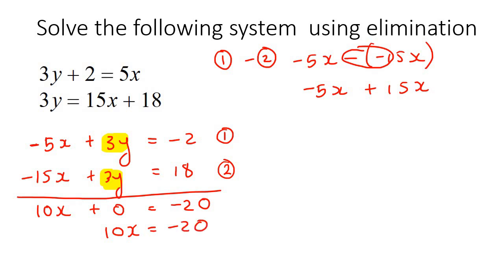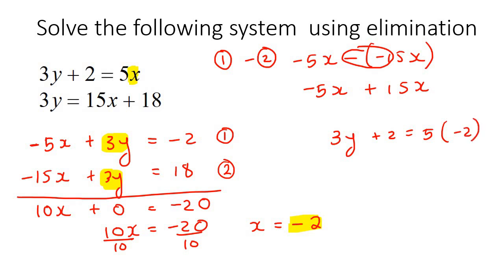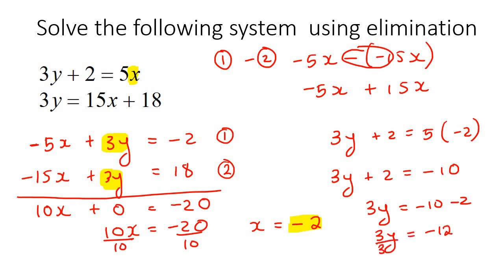So we end up with 10x equals negative 20. We divide both sides by 10 and get x equals negative 2. Now that we know x is negative 2, we need to find y. Take that x value and plug it into one of the equations. Using the first equation: 3y plus 2 equals 5 times negative 2, so 3y plus 2 equals negative 10, meaning 3y equals negative 12. Dividing both sides by 3, y equals negative 4. The final answer is negative 2 and negative 4 — always put the x value first, then the y value.